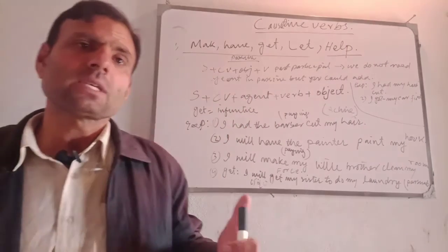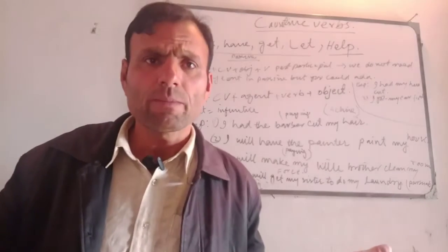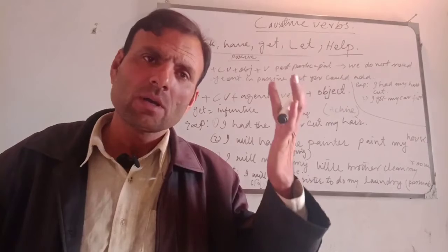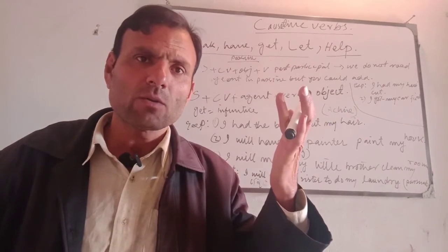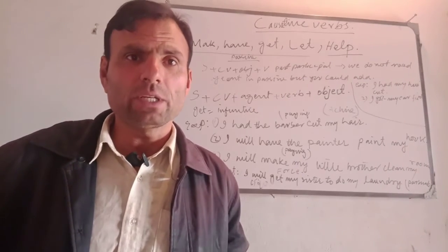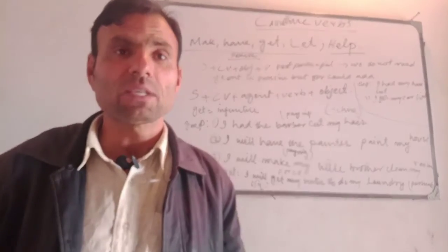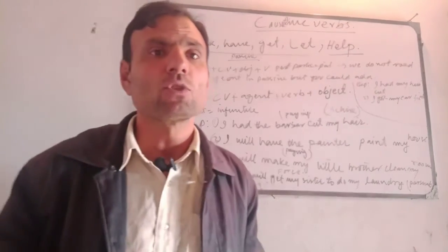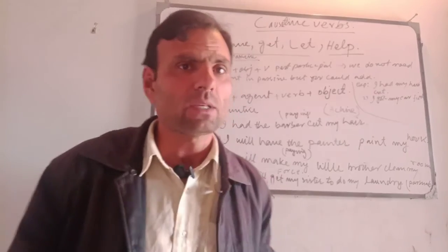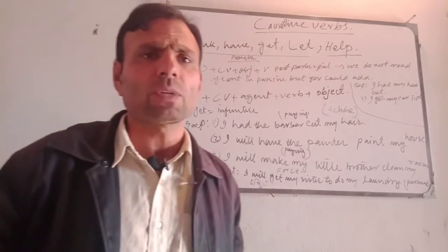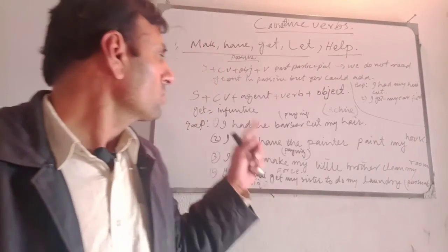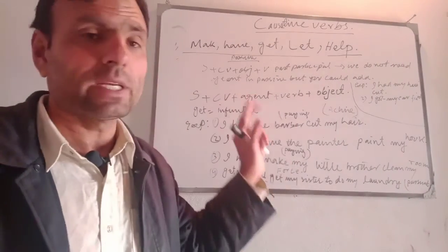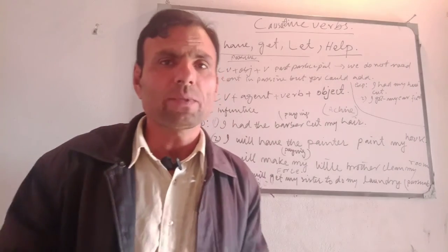The 'agent' is the third person through whom you get the work done. The word 'agent' — like a political agent — refers to someone acting on your behalf or doing things for you. So the agent in causative structures is the one involved in performing the action. I hope that everything is clear.